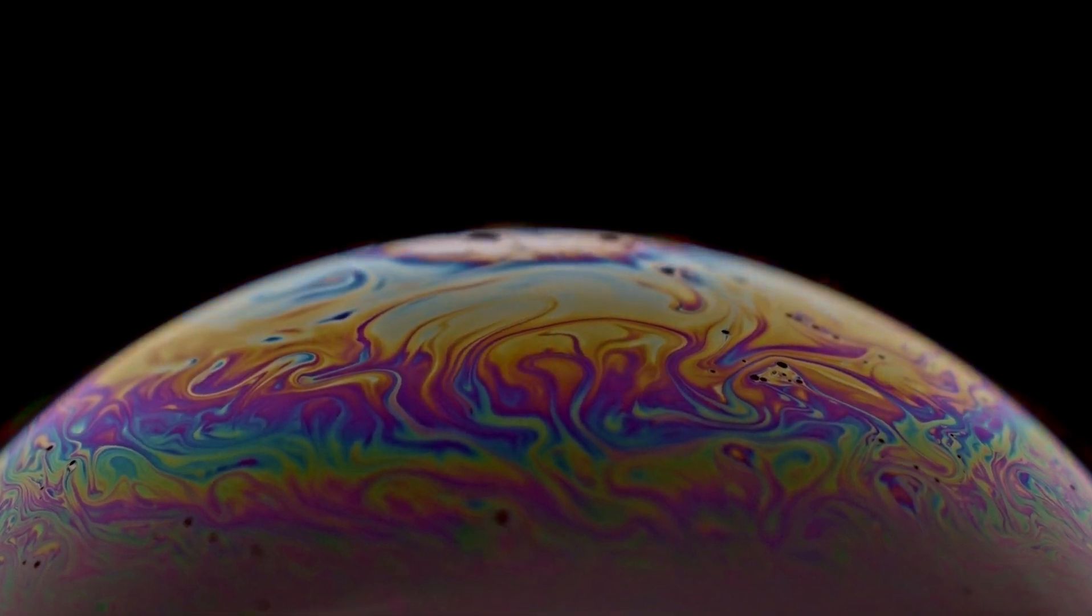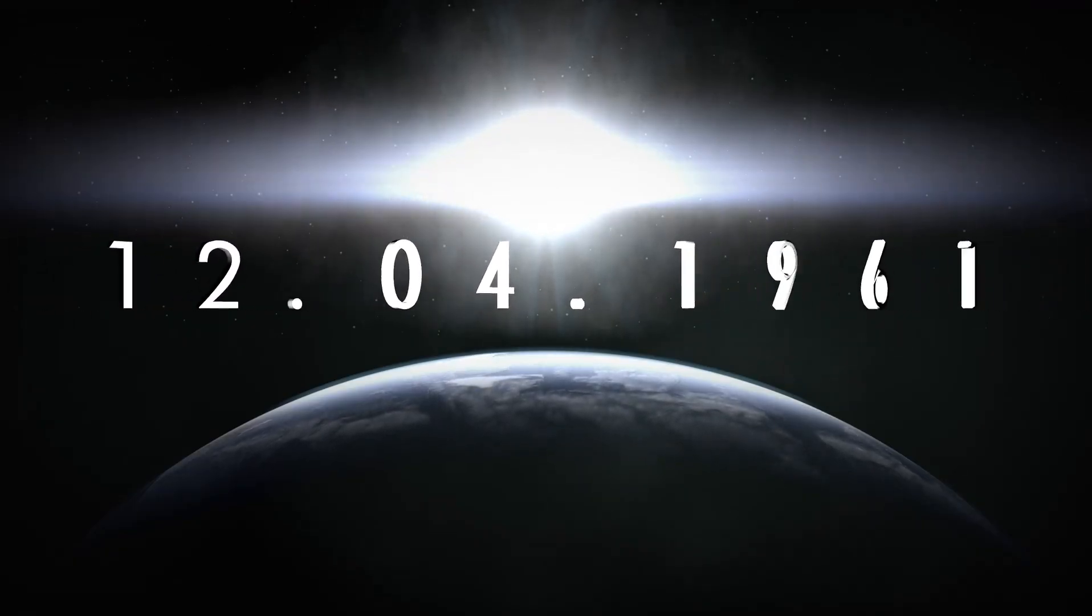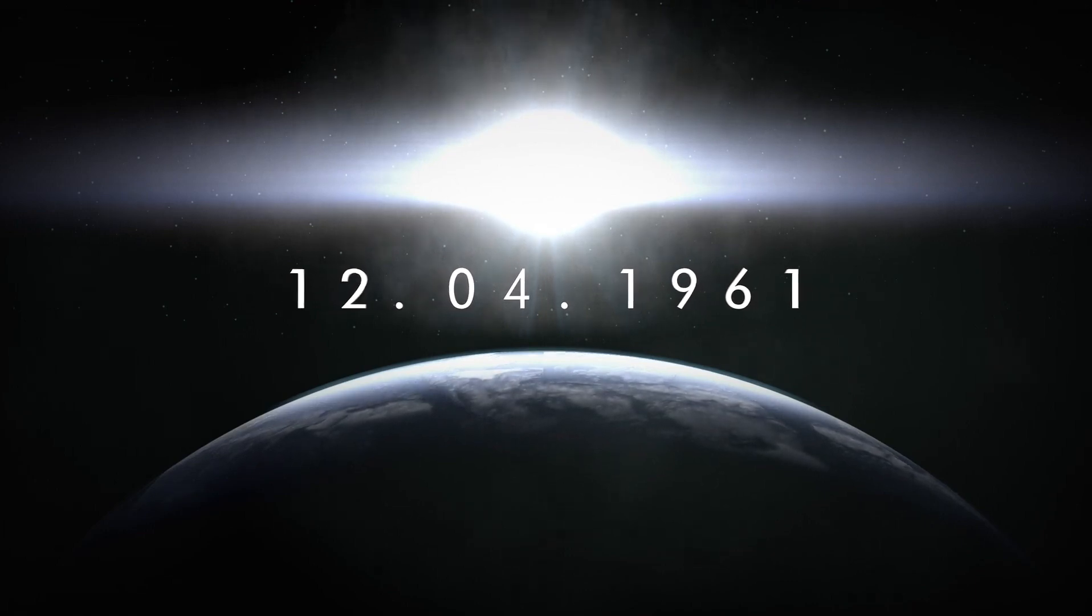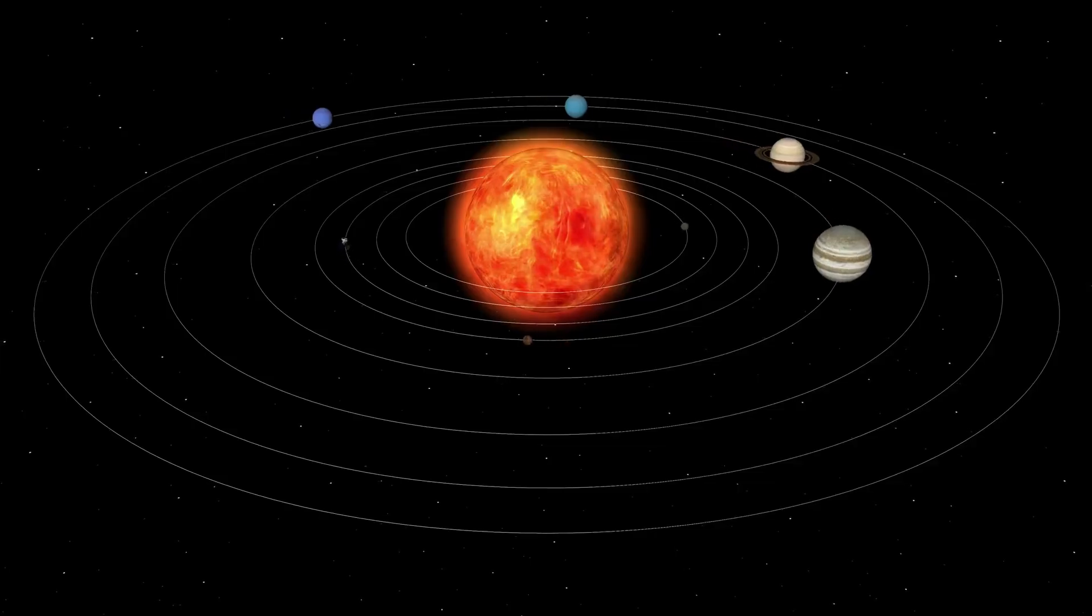For instance, K2-18b orbits in the habitable zone of its host star, a red dwarf known as K2-18. This positioning raises the possibility that the planet's surface might harbor liquid water, similar to Earth's oceans. However, it is important to note that K2-18b orbits its star much closer than Earth orbits the Sun.